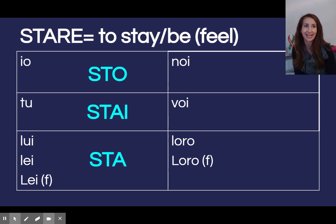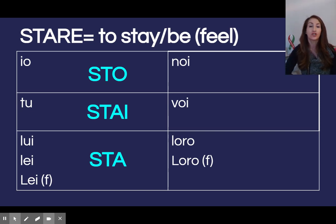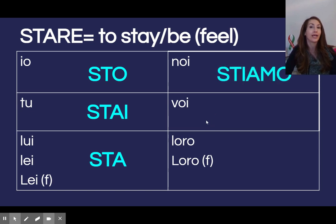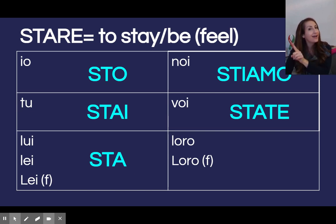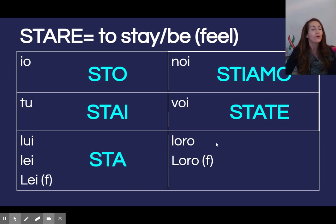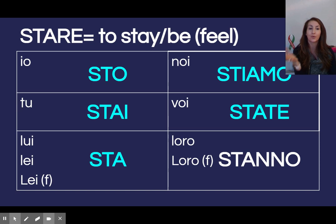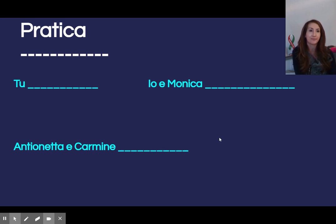Noi and voi are totally regolari. Noi has the regular stem with the regular ending, same con voi. So noi stiamo, voi state — not state, but voi state. And then loro here is similar to our song: noi iamo, voi ate, loro anno, A-R-E. It is anno, however ci sono due n — there are two n's here, which is why I put this coniugazione in a different colore. So: io sto, tu stai, lui/lei sta, noi stiamo, voi state, loro stanno.